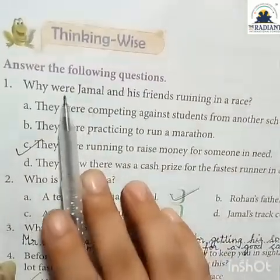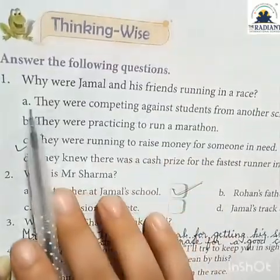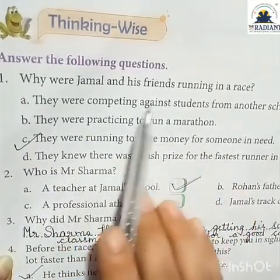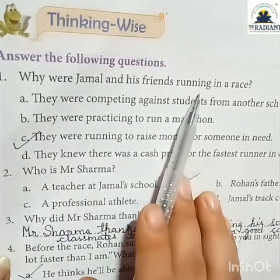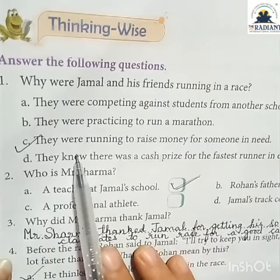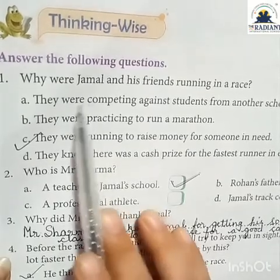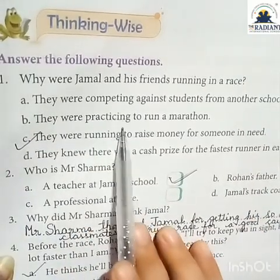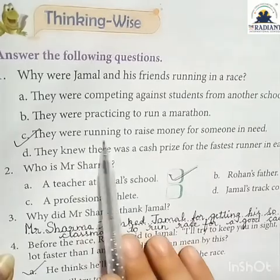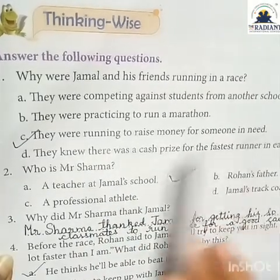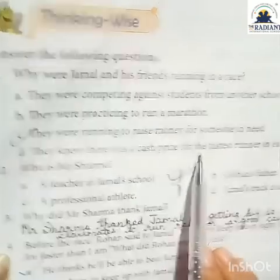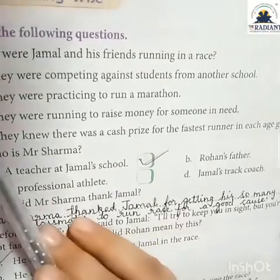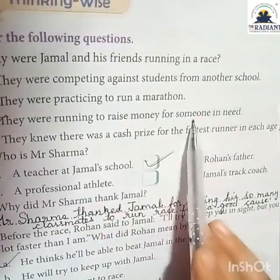Now students, first one — answer the following questions. Question one: Why were Jamal and his friends running in a race? Four options are given. Option A: they were competing against students from another school. Option B: they were practicing to run a marathon. Option C: they were running to raise money for someone in need. Option D: they knew there was a cash prize for the fastest runner in each age group. The answer is option C — they were running to raise money for someone in need.